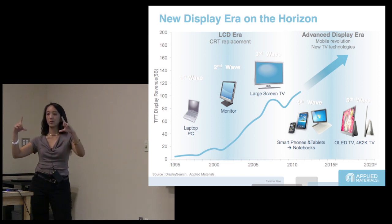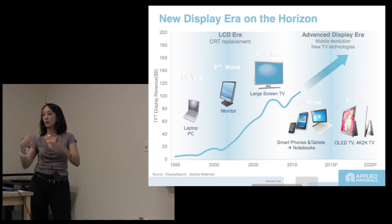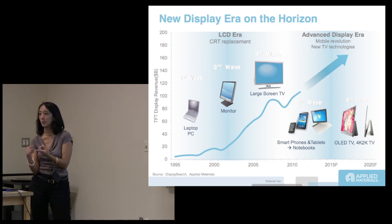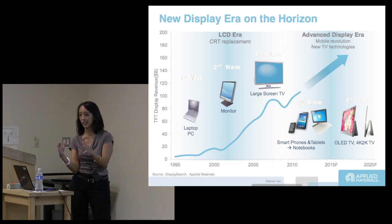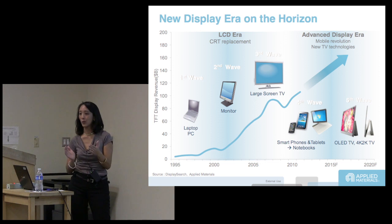Their biggest problem — and this is where Applied Materials can really help — is scaling up. You might go from a small prototype to a gen 2 fab, and then you need to go to a gen 6 size fab. You need to scale up, choose your equipment, and optimize the process for yield. That's what Applied is really good at, so the best thing for us is usually to invest in display companies that already have a working prototype.